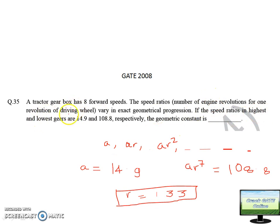If the speed ratio in highest and lowest gear is 14.9 and 108.8 respectively, what will be the geometric constant? This will be a combination. First speed will be A, then AR, then AR square. Here you can see first speed is A, second is AR, third is AR square. Third is square, fourth is cube. So eighth will be how much? 8 minus 1. Second term is 2 minus 1, third term is 3 minus 1. So eighth term will be AR to the power 7, means AR 8 minus 1.